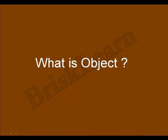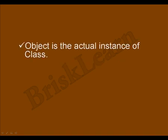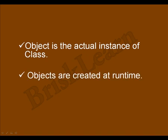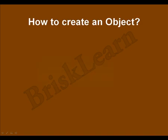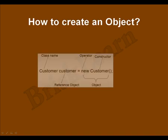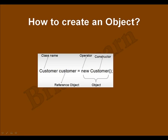Hi everyone, welcome to BriskLearn. In the previous session we learned what a class is. In this session we are going to learn what is an object. An object is the actual instance of a class. Objects are created at runtime. Let us see how to create an object, as we have the following customer class from the previous session.